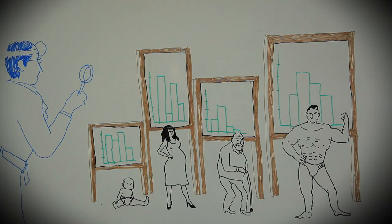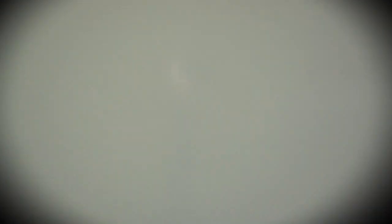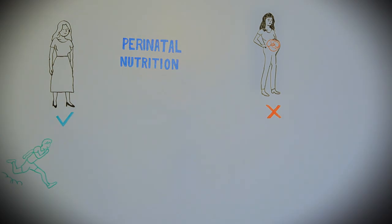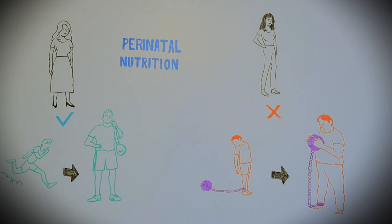Implementing those recommendations is not straightforward. There are some critical times of life when it is important to ensure optimal nutrition. For example, perinatal nutrition has lifelong consequences on weight management and allergies.